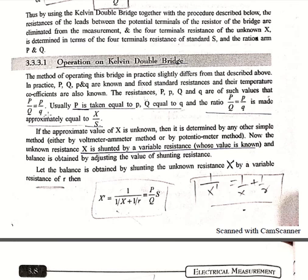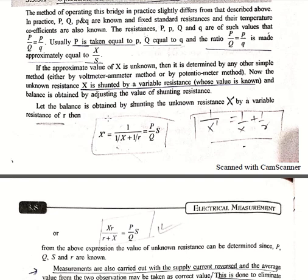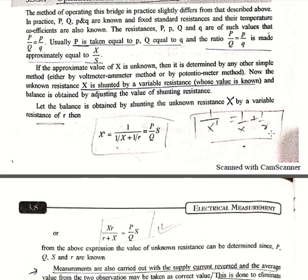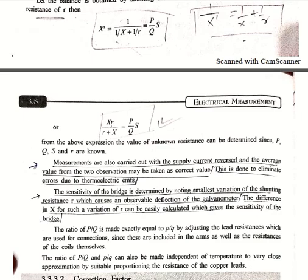Usually P is taken equal to small p and Q is taken equal to small q, so the ratio becomes one-to-one. If the approximate value of X is unknown, it is first determined by another method such as the voltmeter method or potentiometer method. For finding the precise value of X, we shunt X with a variable small resistance r. So our effective resistance becomes 1/X_eff equals 1/X plus 1/r, giving X_eff equals X·r divided by (r + X), and this equals (P/Q)·S.